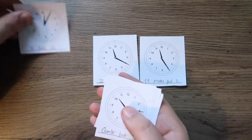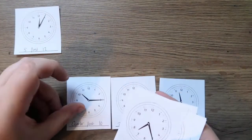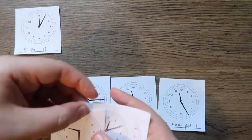Or, for an extra challenge, see if your children can work out what the times would be for each clock 5 minutes later.